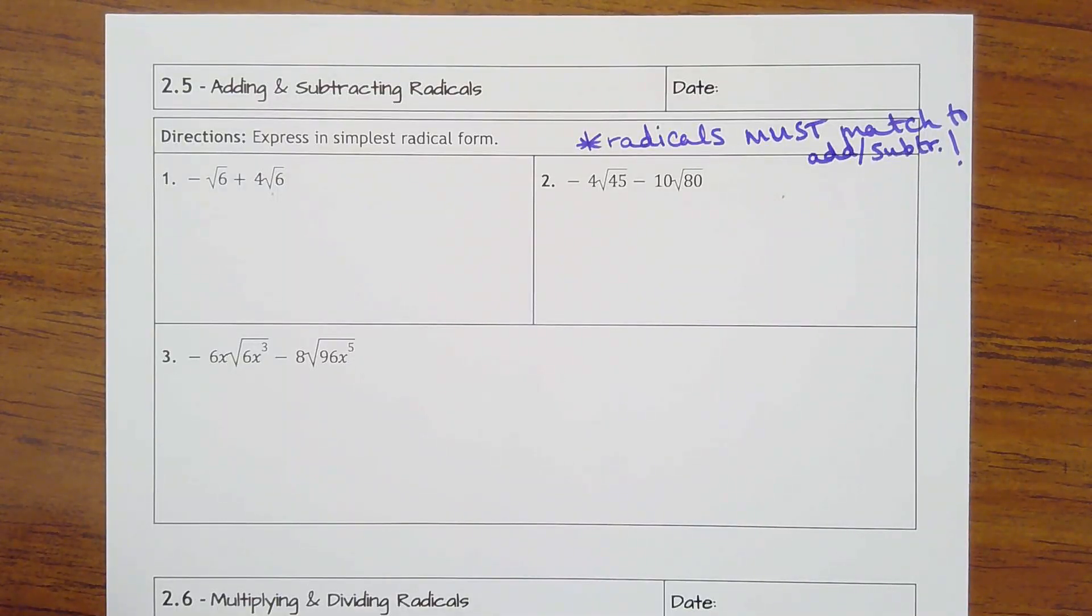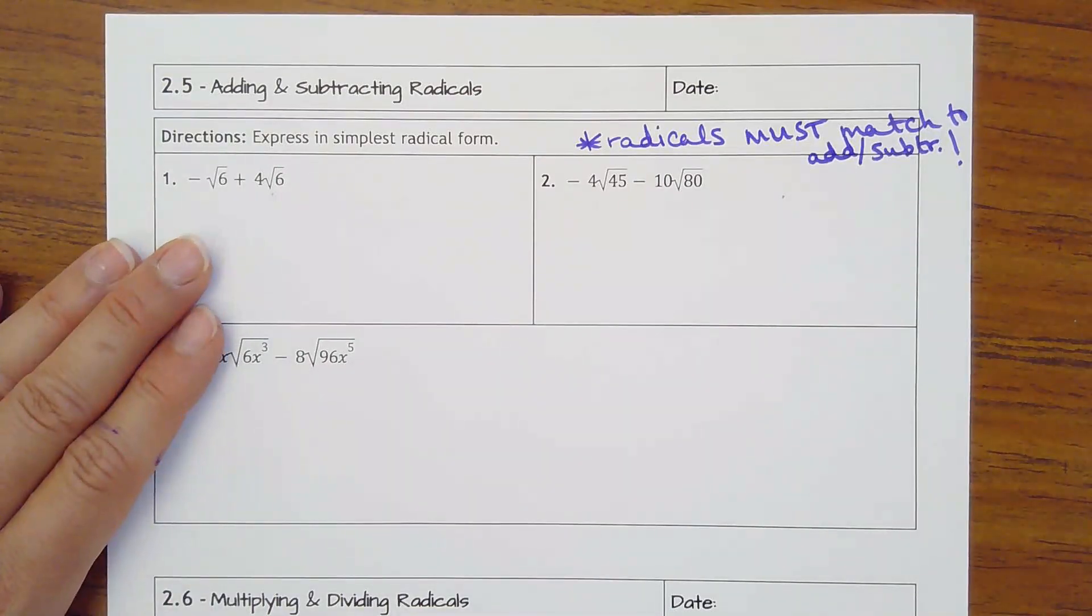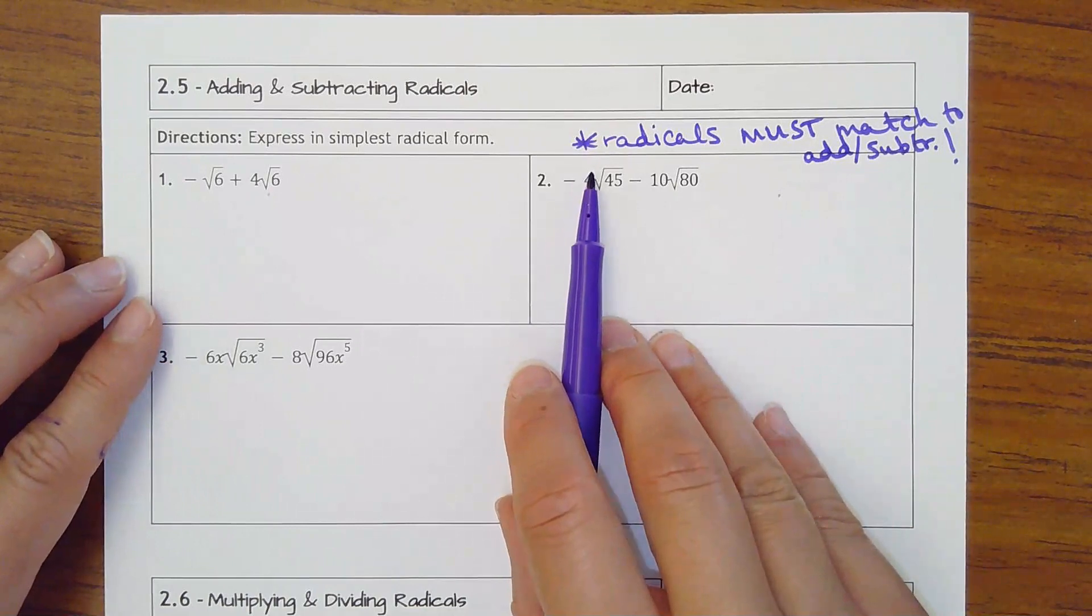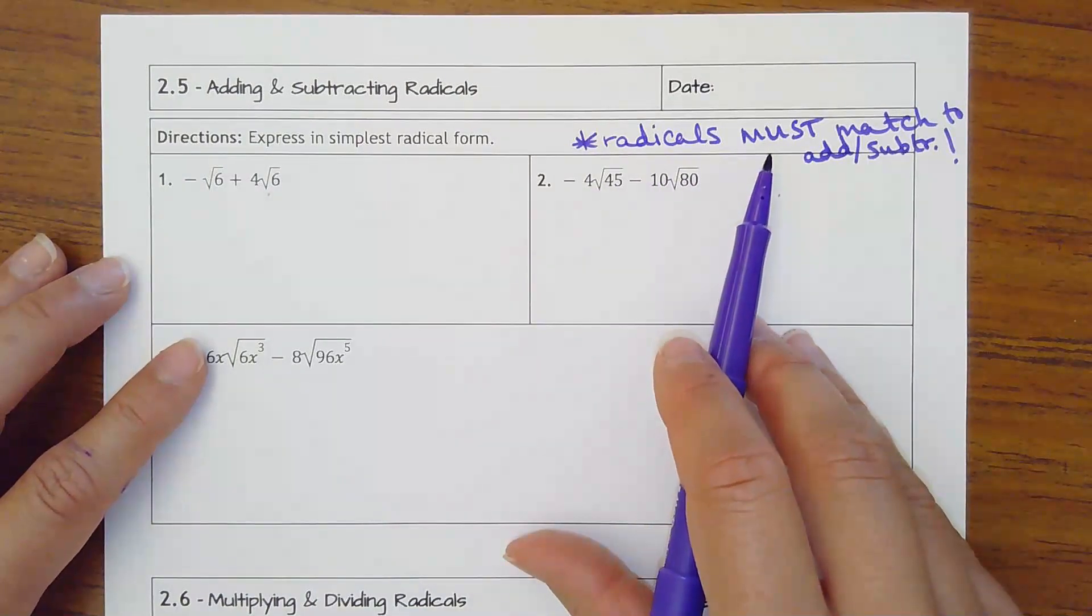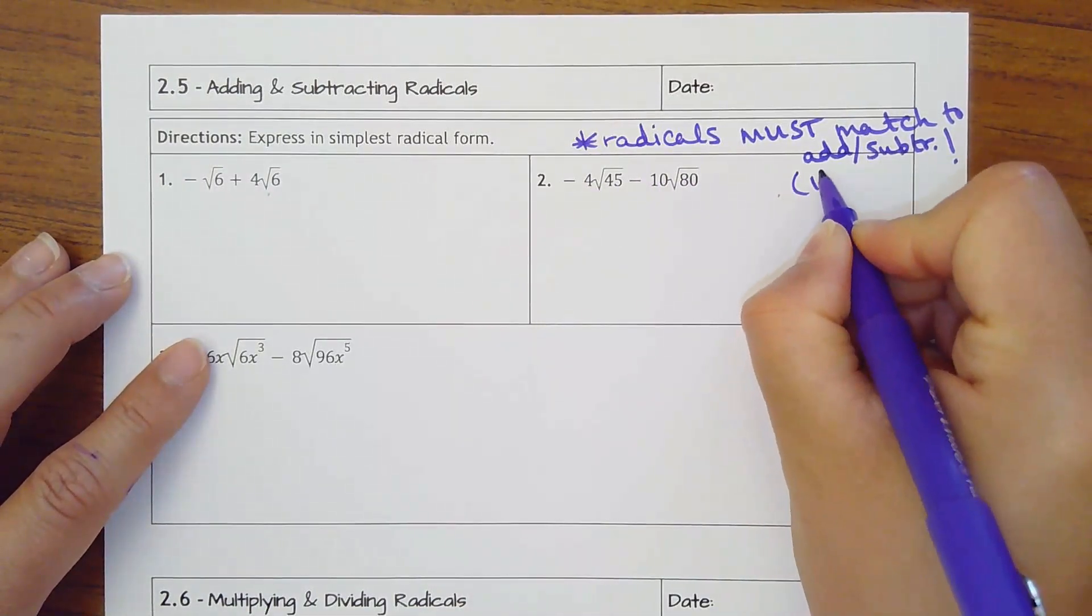2.5 adding and subtracting radicals. Now we've got stuff with roots that need to be put together with addition or subtraction. I made a little note here that says radicals must match to add or subtract.